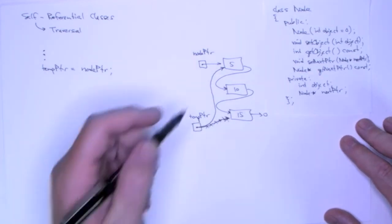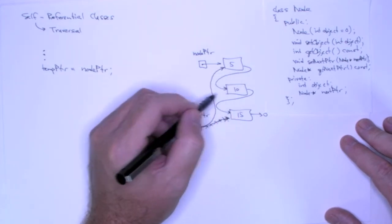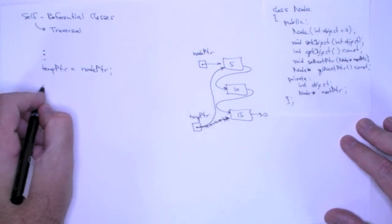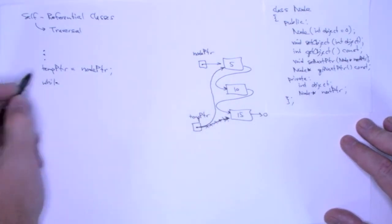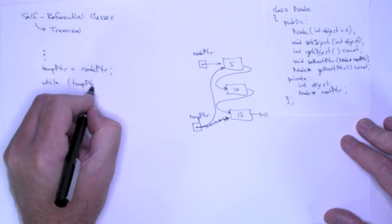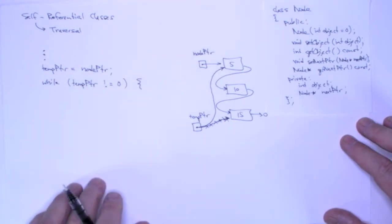And now what I'm going to do is I'm going to successively set temp pointer to the next pointer, and eventually temp pointer will point to null. That's my termination condition. So as long as temp pointer points to something, as long as it's not equal to null, then I want to keep looping.